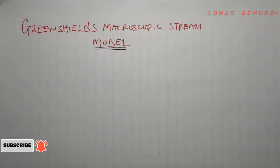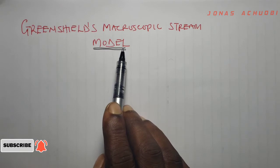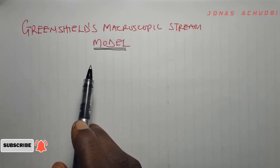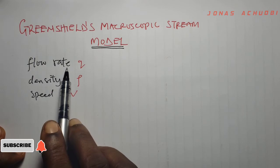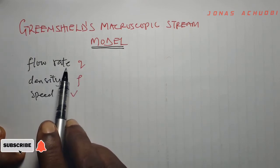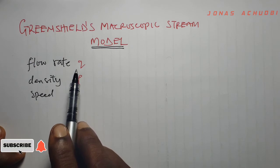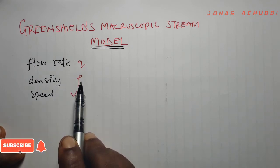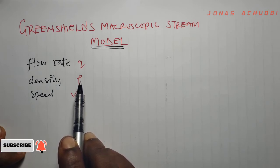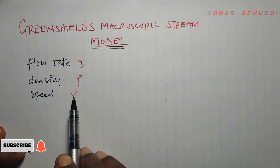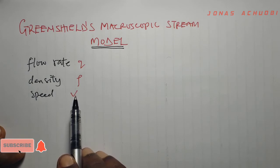Hello and welcome to today's video where we shall be discussing in detail the Greenshields macroscopic stream model. The parameters of the macroscopic stream models are: flow rate, denoted by Q, which is the number of vehicles passing through a particular position on the road per unit time; density, denoted by ρ, the number of vehicles per unit distance at a given time; and speed, denoted by V, the rate of change of position per unit time.